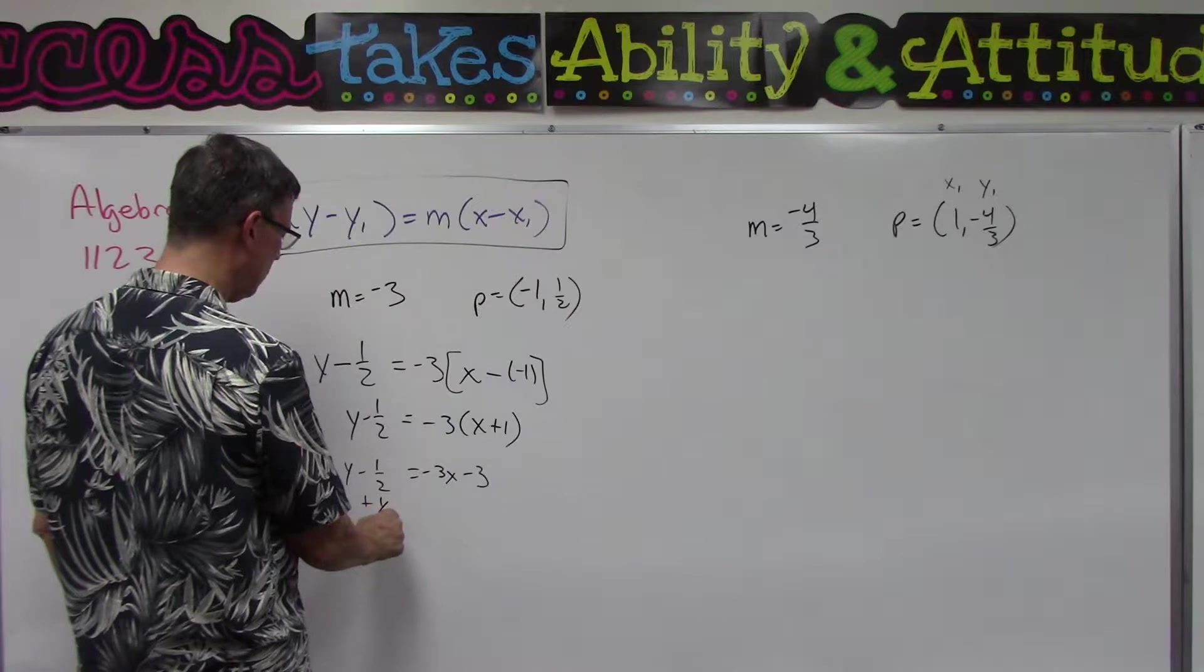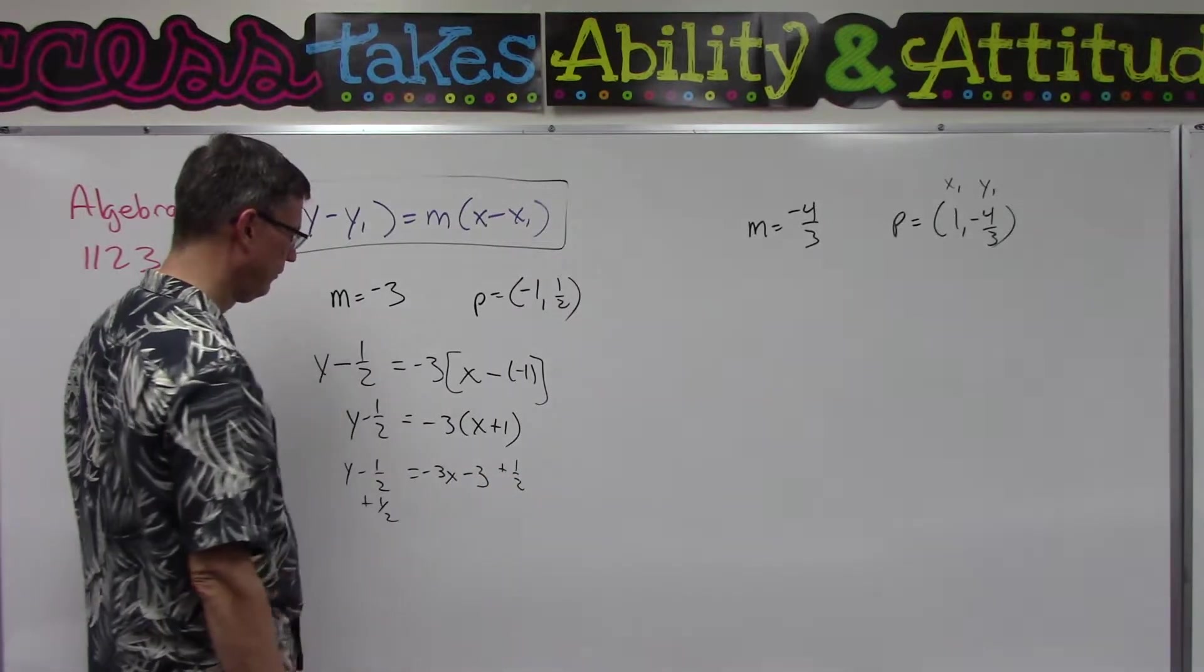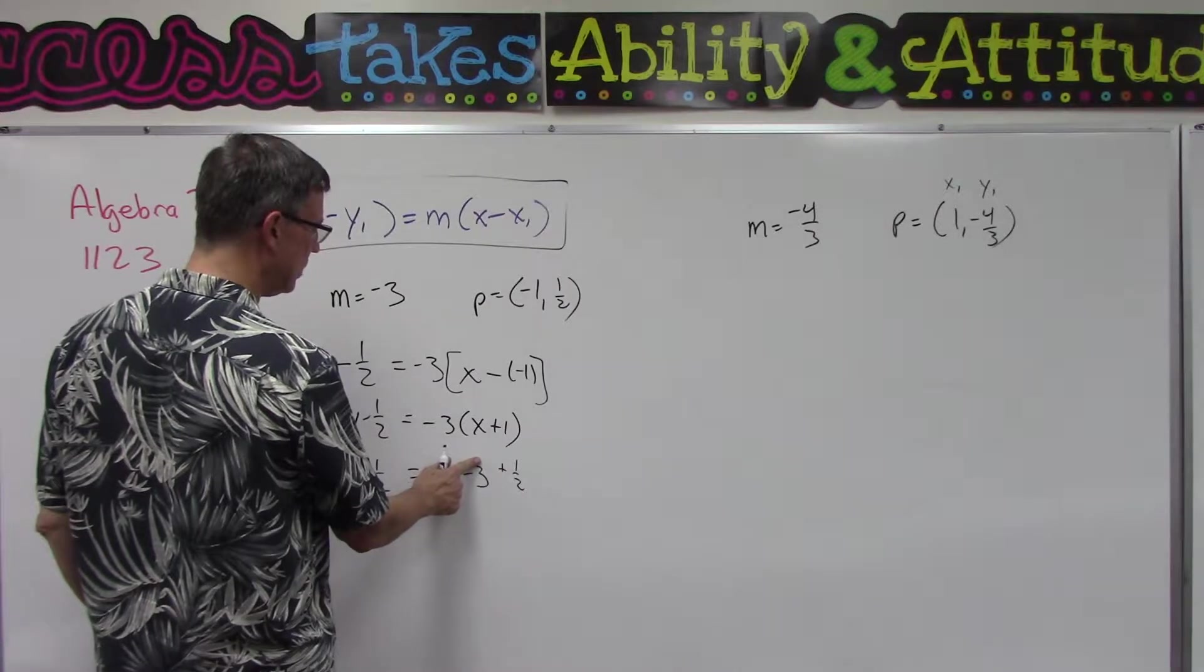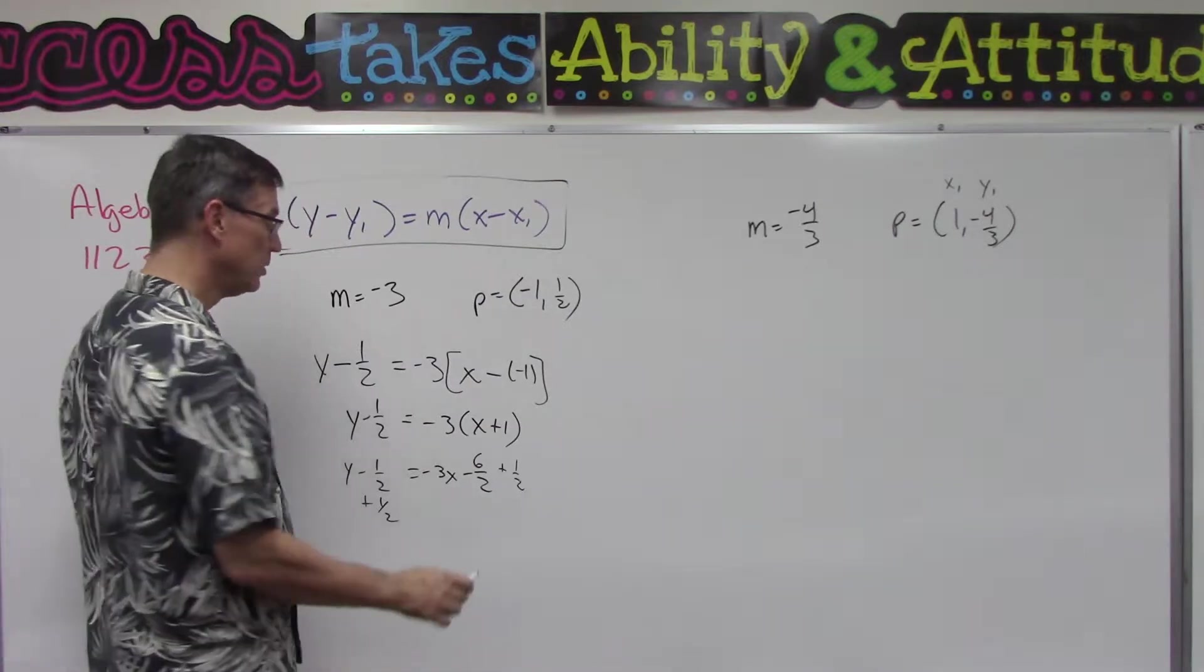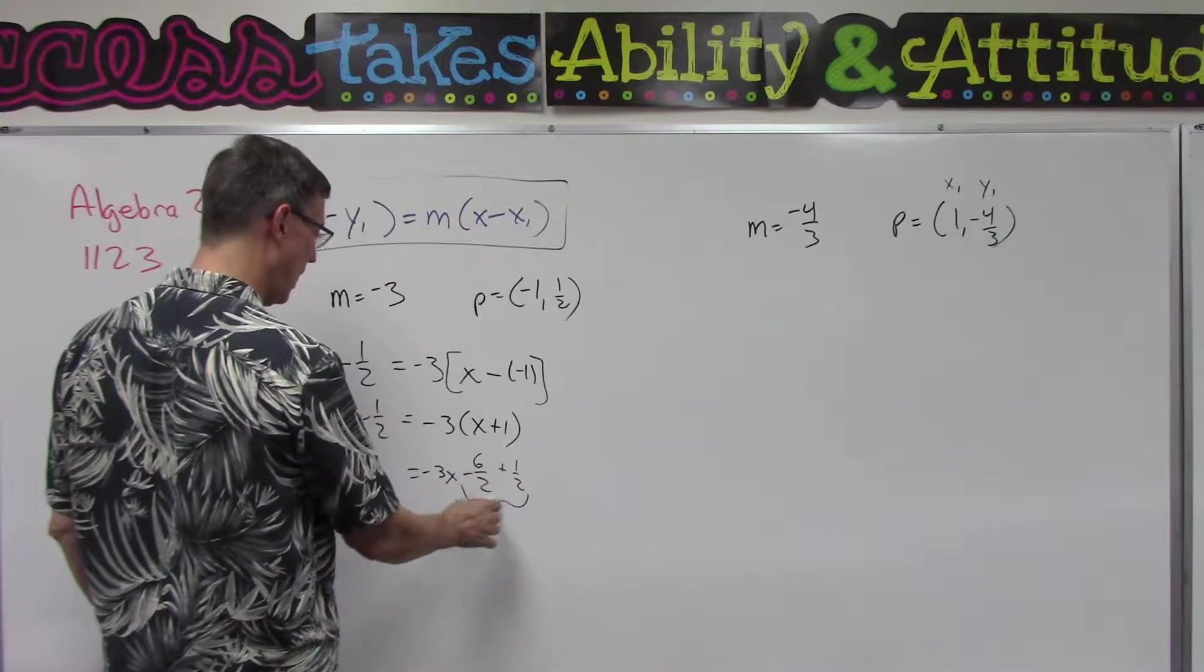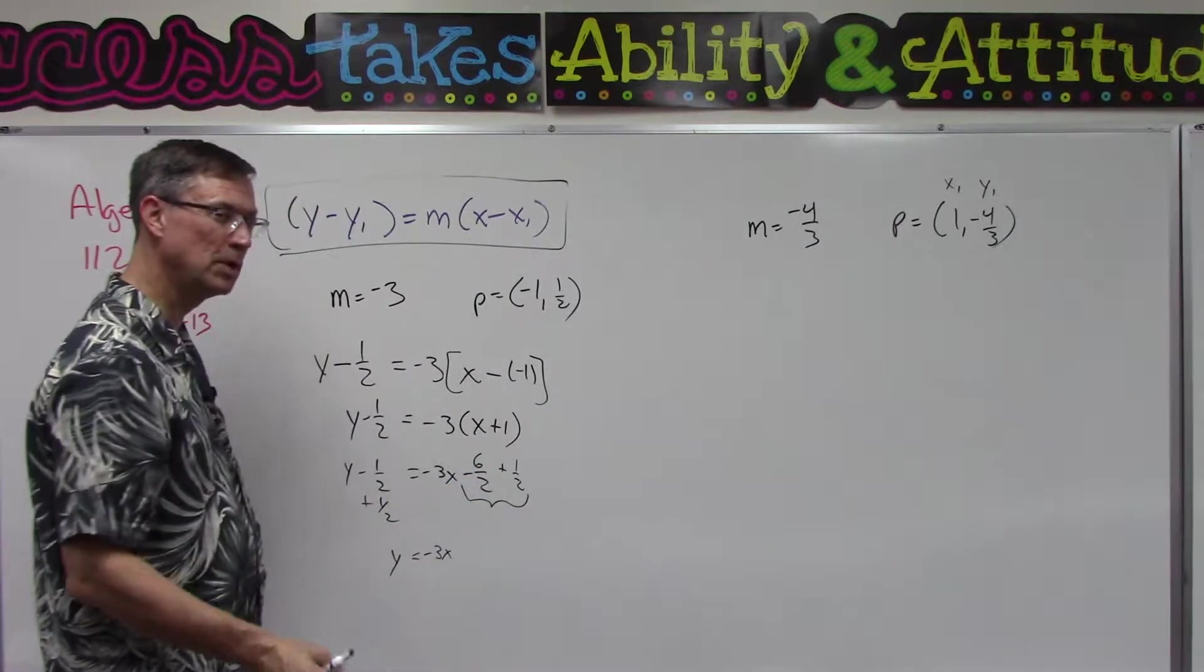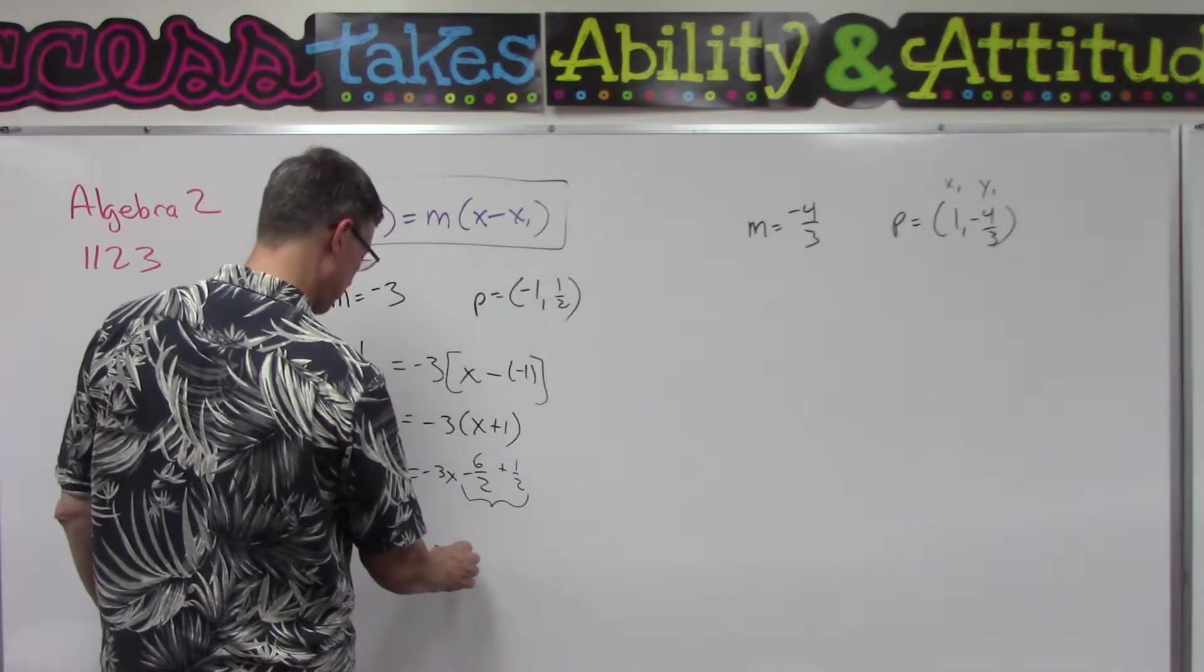In order to do that we need to get a common denominator, so negative 3 is going to become negative 6 over 2. So now I'm going to have to combine negative 6 over 2 plus 1/2, so I have y equals negative 3x, negative 6 plus positive 1. Subtract the smaller from the larger, keep the sign of the larger, so negative 5/2.